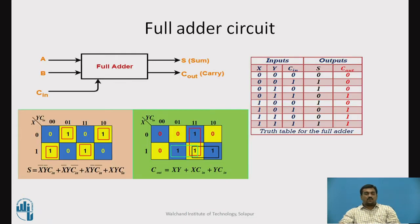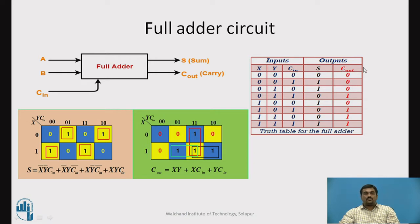A full adder circuit is a combinational circuit which performs addition of three binary bits. These three binary bits are represented as A, B, and C_in. There are two outputs, namely sum and carry, represented as S and C_out. This is the truth table for the full adder circuit, showing all possible input combinations and their outputs, from which we can find the logical expressions for S and C_out.